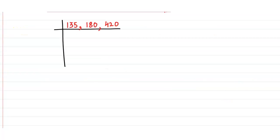We can see that these 3 numbers are divisible by 5, as the divisibility rule of 5 states the ones place should be 0 or 5. So we take out 5 and we are left with 27, 36, and 84.